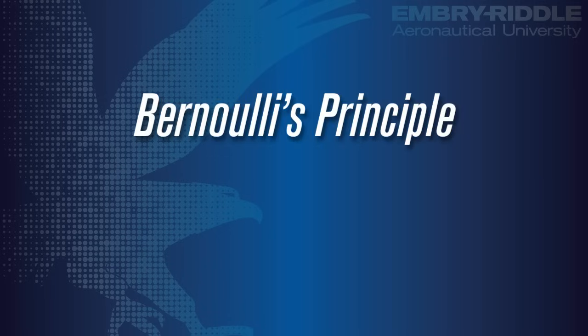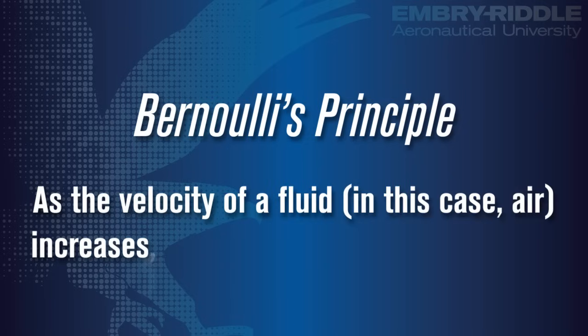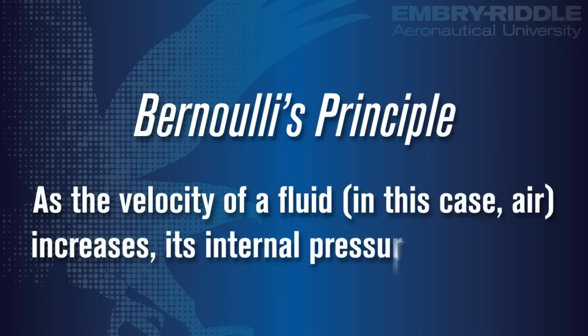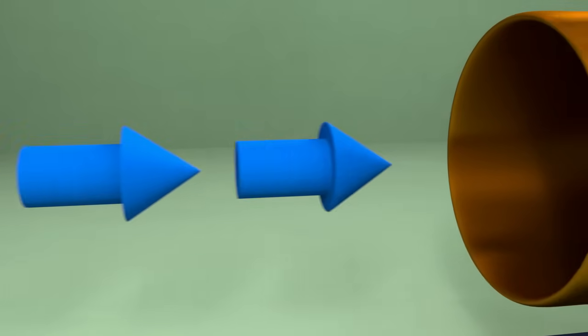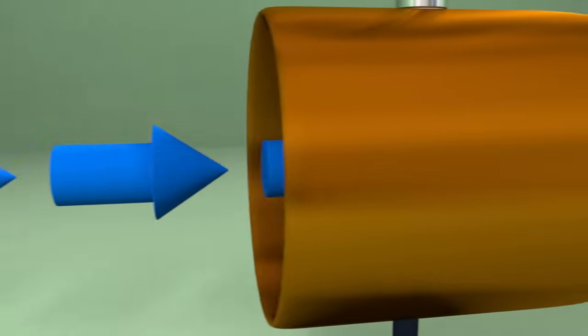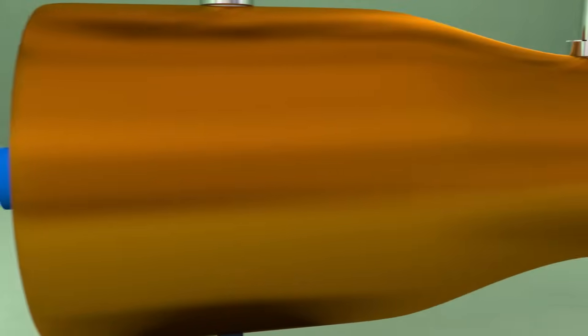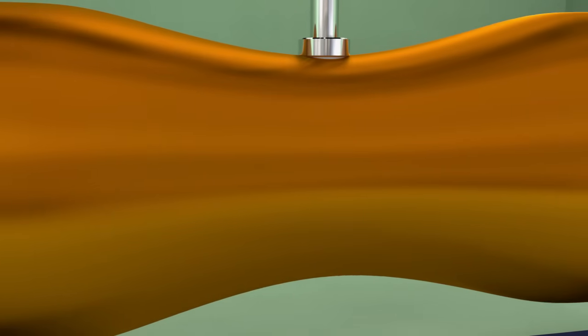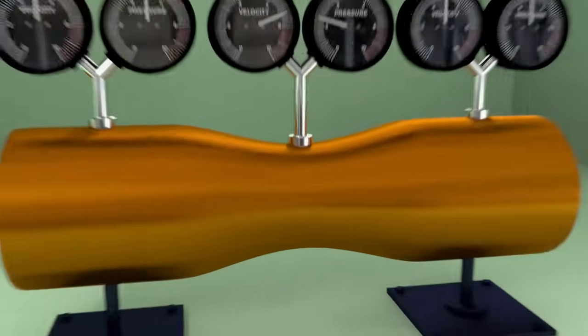Bernoulli's principle states that as the velocity of a fluid — in this case air — increases, its internal pressure decreases. We can visualize this by having air flow through a tube with a narrower middle section, which we call a venturi.